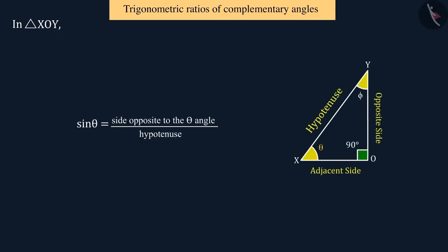For sine theta, we can say that its value will be equal to the ratio of the opposite side of theta and hypotenuse, where the opposite side is OY and the hypotenuse is XY.